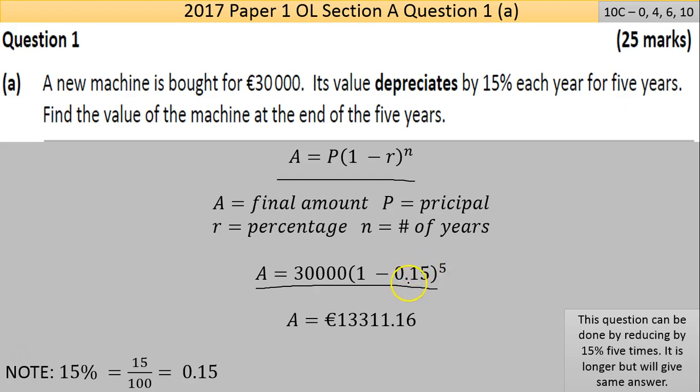It's important to understand that they all are the same thing. As I said here at the bottom, you could do this by reducing by 15% five times. So get 85%, take it away and work out from that perspective. There are multiple ways to this question, all perfectly valid.